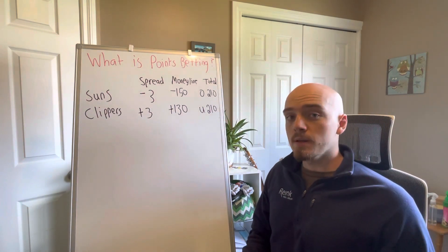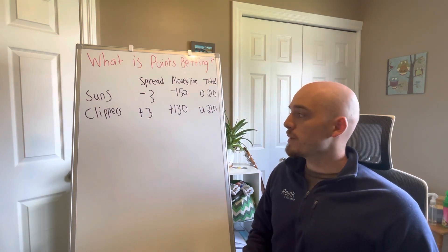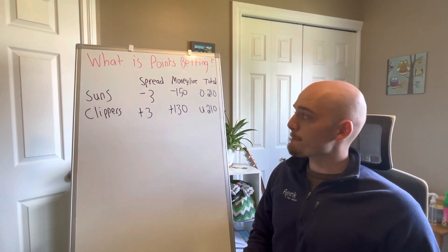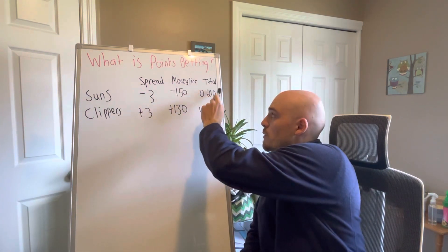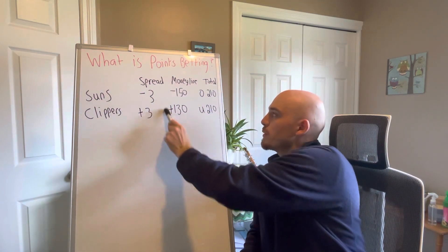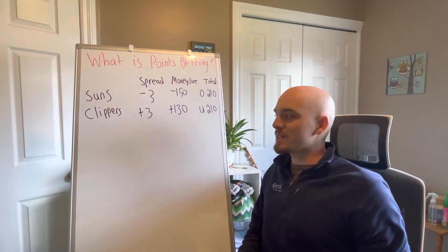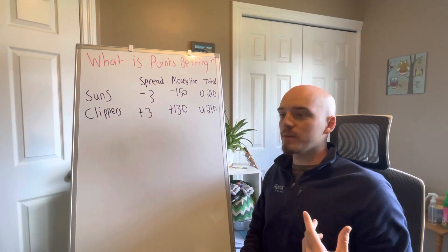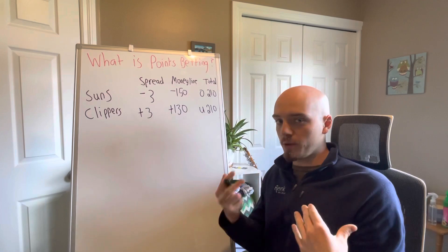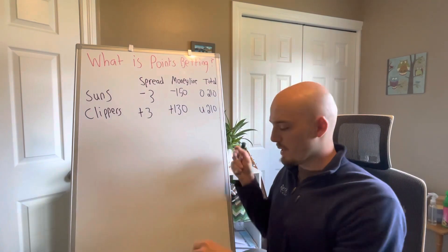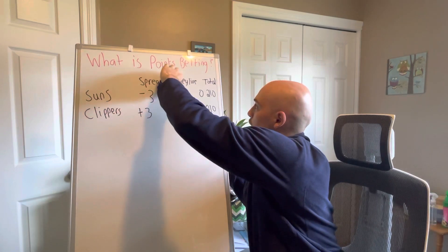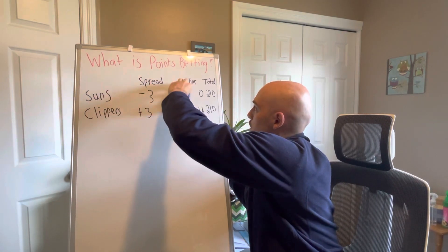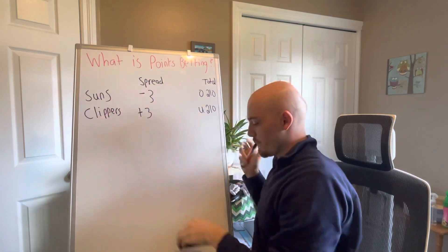With PointsBetting, you can only PointsBet on bets that have variables like plus or minus three or over under 210 points. You can't PointsBet the Moneyline because there's no way to measure being more right or wrong. That's just whoever wins the game. So let's not even think about the Moneyline in relation to PointsBetting.